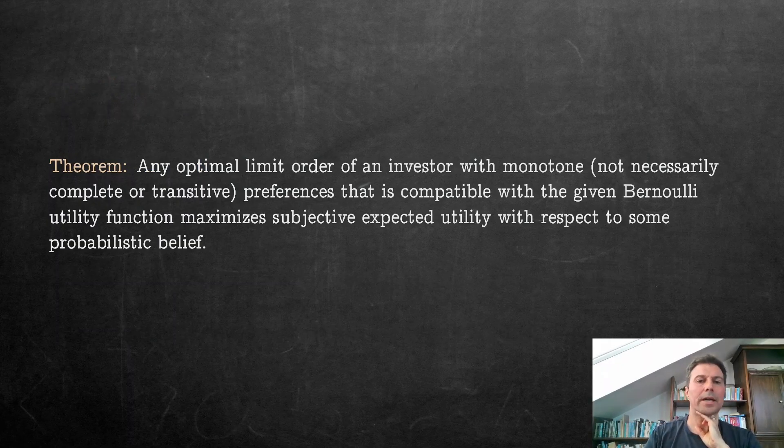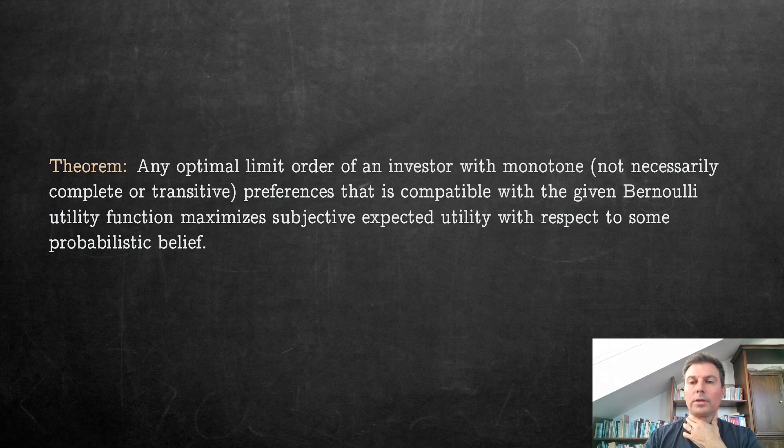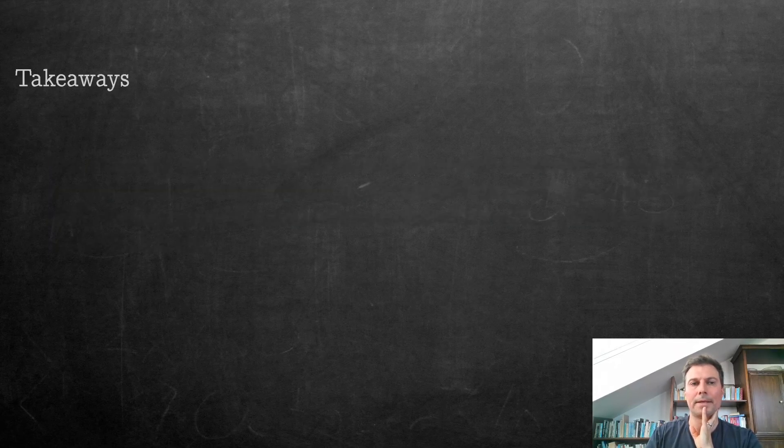Then we get indeed this theorem again that any optimal limit order of an investor with monotone, not necessarily even complete or transitive preferences that is compatible with the given Bernoulli utility function maximizes subjective expected utility with respect to some probabilistic belief. So that means again this is our way of saying if you have limit orders, if you have access to limit orders at least in our setting which is fairly general but not dynamic, in our setting you get that an ambiguity-averse decision maker as long as this person has monotone preferences and evaluates risk with expected utility will behave as if this person was a subjective expected utility maximizer.